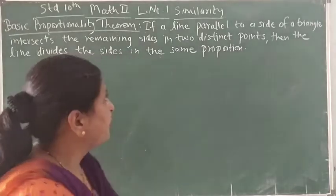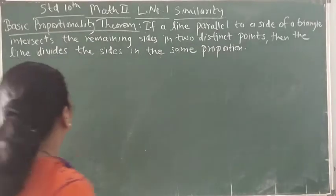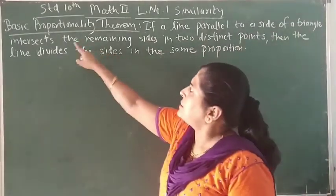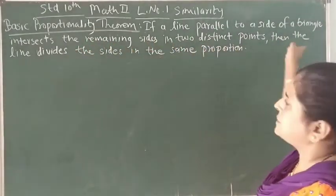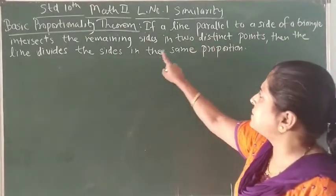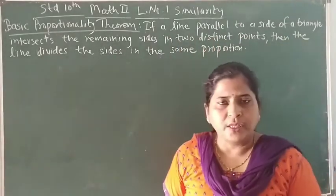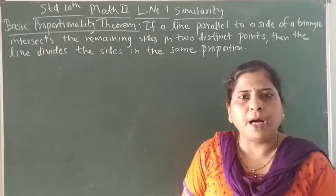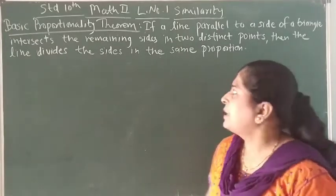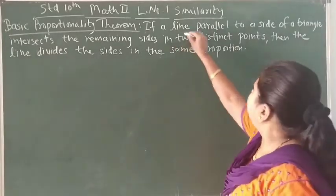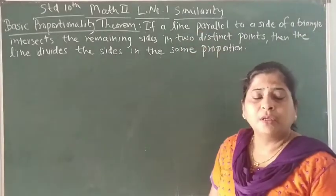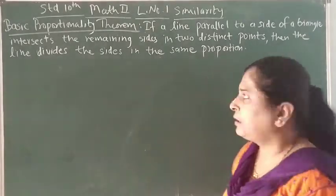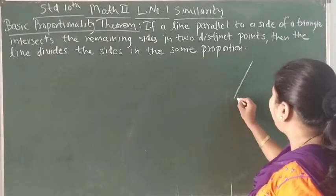Now let's read the statement first. In the given statement: if a line parallel to a side of a triangle intersects the remaining sides in two distinct points, then the line divides the sides in the same proportion. There is quite a possibility that when you read it the first time you may not understand, but if you read it in parts, you can understand it clearly. So what is given? If a line parallel to a side of a triangle — meaning there is a line which is parallel to one of the sides of the triangle — we have to draw the triangle first.